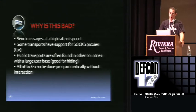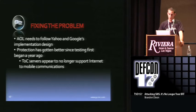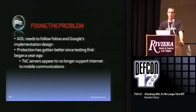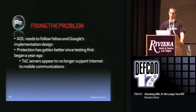Why is this bad? You can send messages at a high rate of speed. Some transports have support for SOCKS proxy, such as Tor, so you can push all your traffic through Tor and be completely anonymous. The public transports are often found in other countries with a large user base — good for hiding. And all attacks can be done programmatically without interaction. Fixing the problem: AOL has done a pretty good job so far, but they need to push their implementation further and force users to respond back before any chats can continue, falling in line with Yahoo and Google. The protection has gotten better since I began testing. AOL has two servers, OSCAR and TOC, and the TOC servers no longer appear to support internet-to-mobile communications — I noticed this during a month-long testing of a couple of friends. I don't know if I was attributed to that, but it's definitely shut off now.